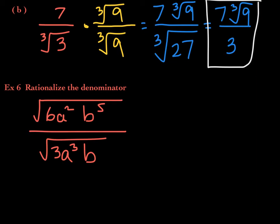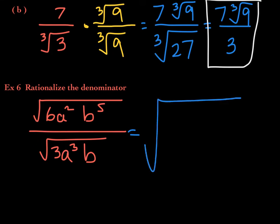This next example asks us to rationalize the denominator of the square root of 6a²b⁵ divided by the square root of 3a³b. It might be easier to simplify first before rationalizing. Using the quotient rule for radicals, the quotient of these square roots equals the square root of their quotient: the square root of 6a²b⁵ divided by 3a³b.